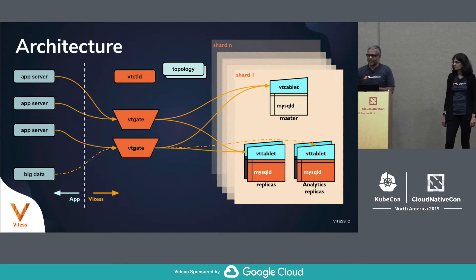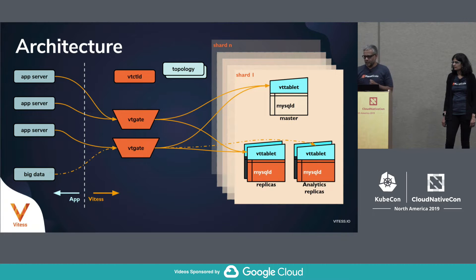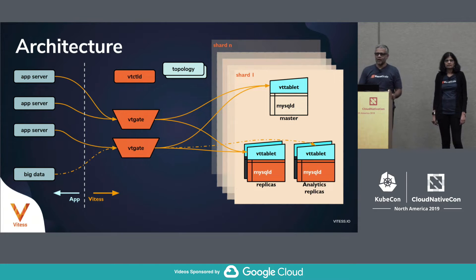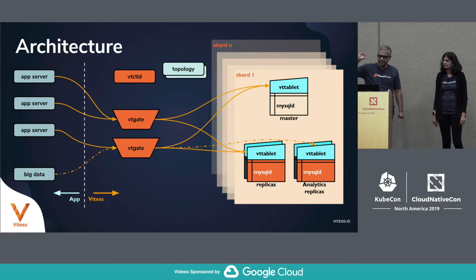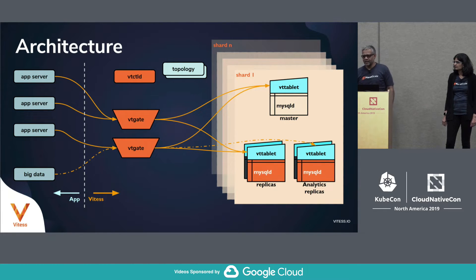This is the Vitesse architecture diagram. VtGate is the stateless proxy — it supports the MySQL binary protocol, has a full SQL parser, and gives your application the view that it's talking to a single humongous database when behind it are multiple shards. Each shard is basically a MySQL cluster with one master and multiple replicas, replicating using MySQL binary protocol. Each MySQL instance gets a sidecar process called VTTablet, which protects that MySQL instance and helps during reparenting, backups, and many other operations.